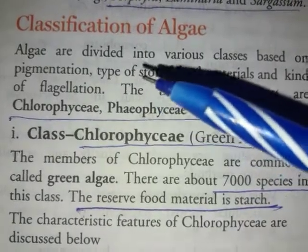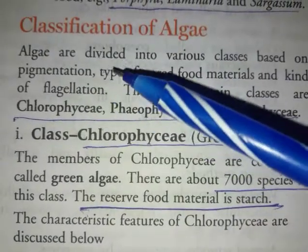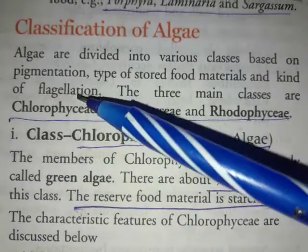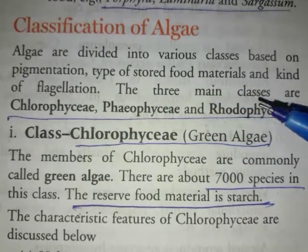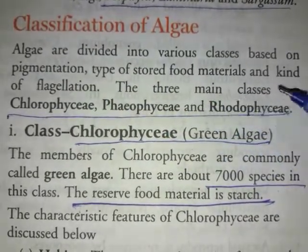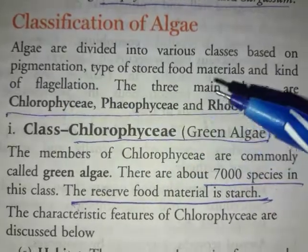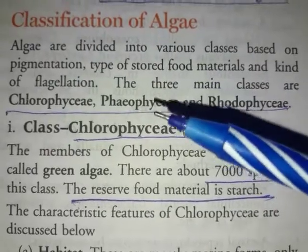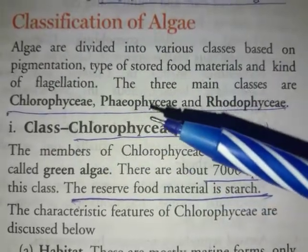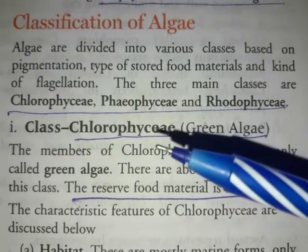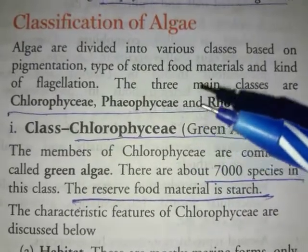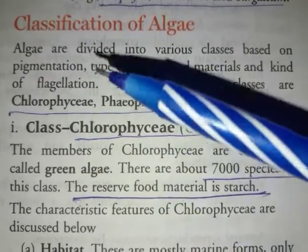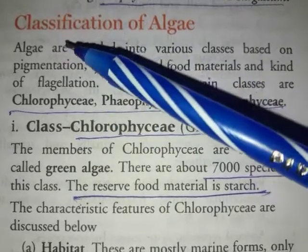Hello everyone, Class 11. Today we are going to discuss the classification of algae. Algae are divided into various classes based on pigmentation, type of stored food material, and kind of flagellation — which type of flagellation is present, in which form the food material is stored, and which type of pigmentation is there. On these three main bases you can classify algae.